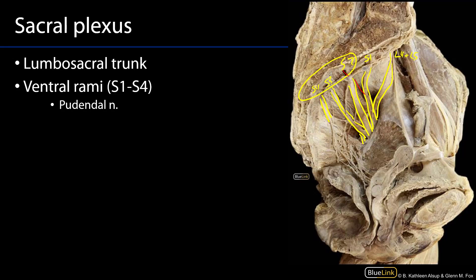Let me give a few points of orientation. Behind these ventral primary rami is the piriformis muscle. Here is the ischiococcygeus muscle, or just the coccygeal muscle. And coming down from the tendinous arc of levator ani is the iliococcygeus muscle, or the iliococcygeus part of levator ani. We can see that proximal part of the pudendal nerve as it's diving down behind these muscles.